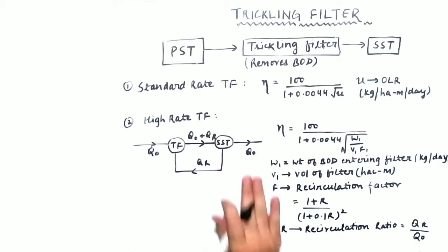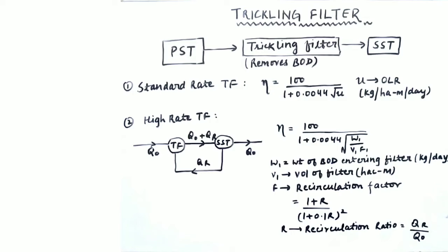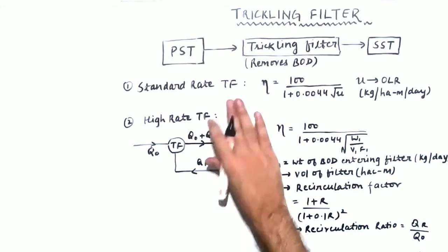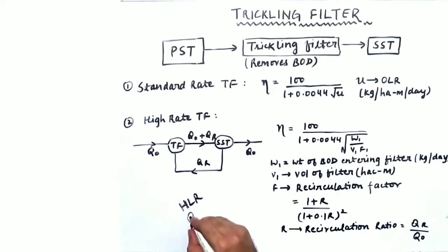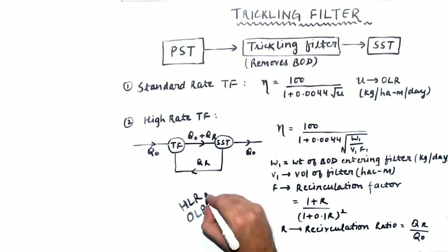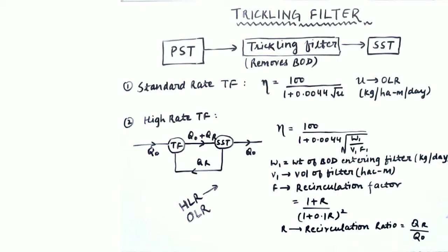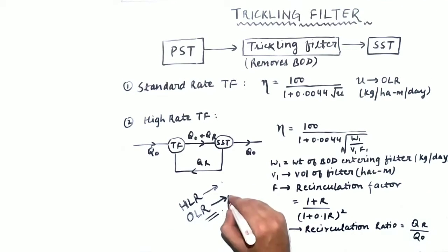In the standard rate trickling filter, there is no recirculation of the discharge from the secondary sedimentation tank. Because of no recirculation, the loading rate is very less. There are two terms: HLR, which is hydraulic loading rate — the rate at which sewage is loaded into the filter — and OLR, organic loading rate, which is the rate at which the biological oxygen mass is loaded.